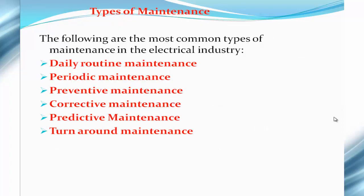There are various approaches by which maintenance and repairs can be carried out in the workshop or industry, and it usually depends upon the nature and objective of the industry. The common methods include: daily routine maintenance, periodic maintenance, preventive maintenance, corrective maintenance, predictive maintenance, and turnaround maintenance.